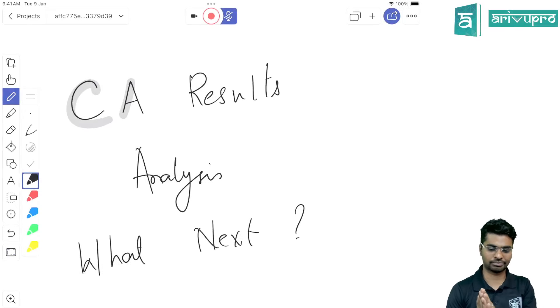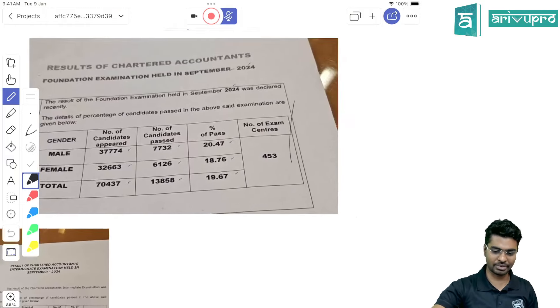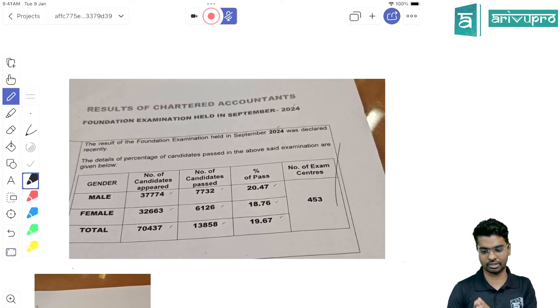Hello students, congratulations on your CA results. All three results are out today - foundation, intermediate, and final. Let's discuss the foundation results. The total percentage of students who cleared it is roughly around 20 percent. Compared to the last attempt, it's a lot better.